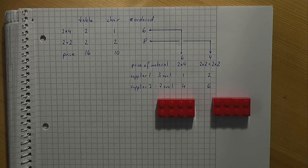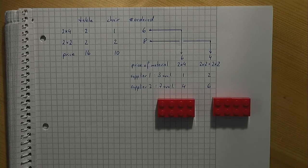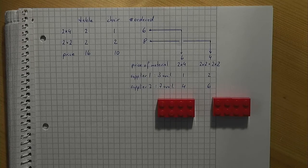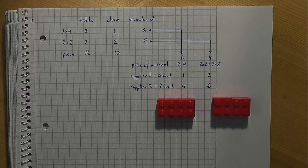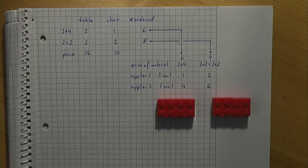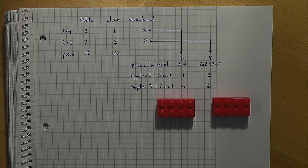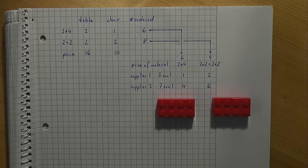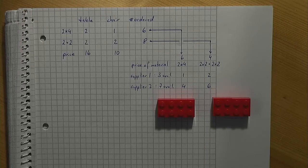Let's reconsider the furniture production problem that we have studied in previous videos. As before, we are interested in making tables and chairs. The price for a table is 16 euros and the price for a chair is 10 euros. 2x4s and 2x2s are needed to build the furniture and the production coefficients are known.